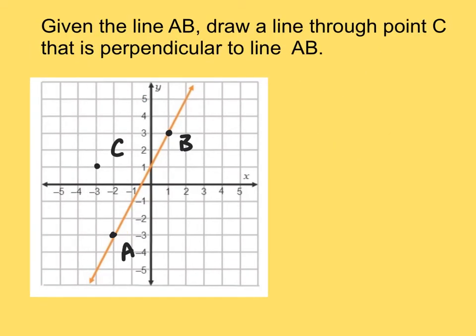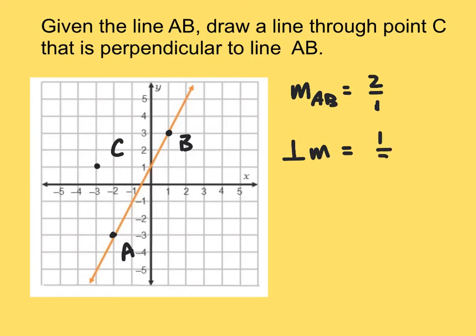On this last question, given the line AB below, draw a line through point C that is perpendicular to line AB. We have the same line as before. We know that the slope of this line is positive two over one. So I'm going to write out the slope of line AB as two over one. Now, if we want to write a perpendicular slope, remember we want to flip our fraction. Instead of two over one, I'm going to write it as one over two and change the sign to make it opposite. So we're going to use this slope of negative one half to generate more points on this line.